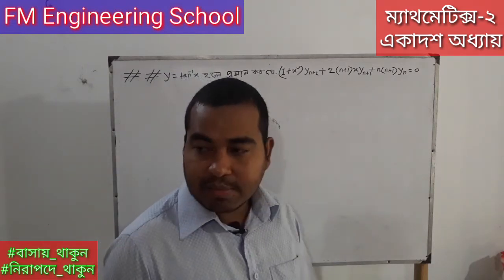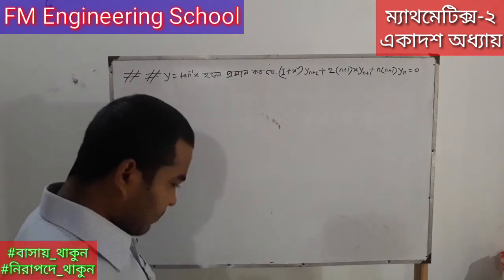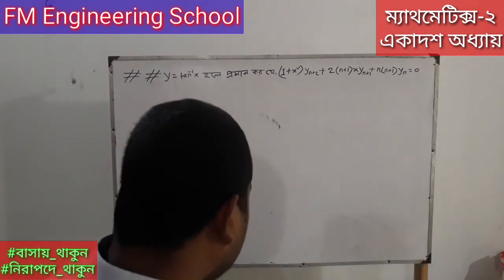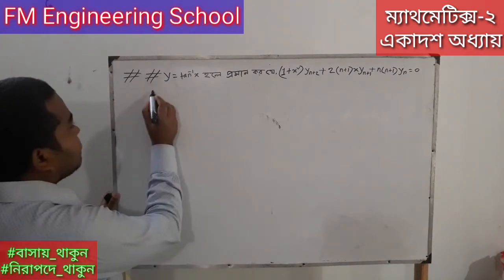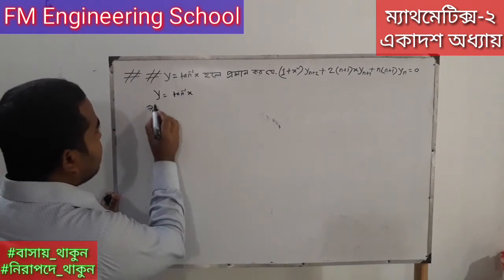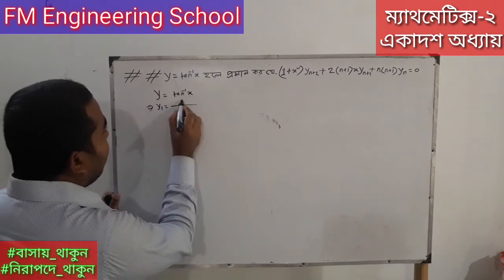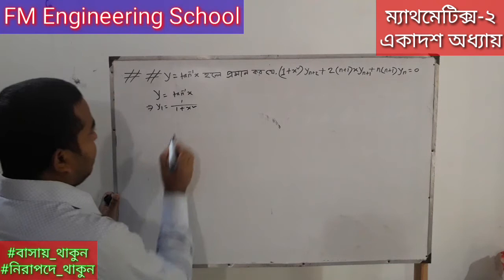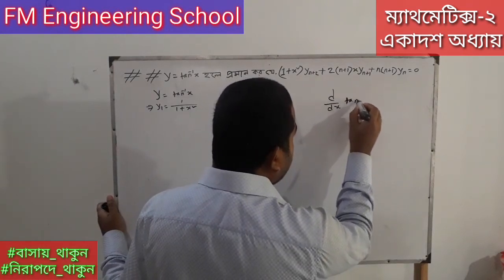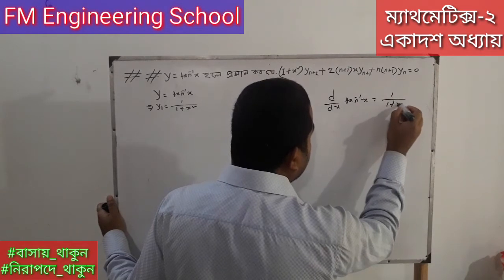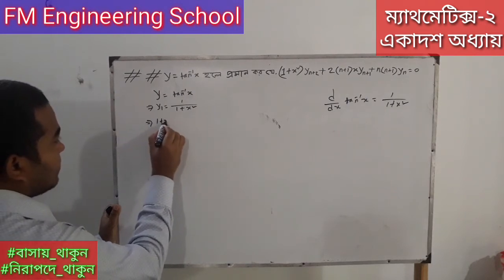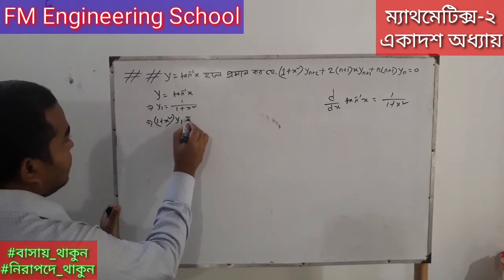The problem is: y is equal to tan inverse x. In this case, we will differentiate to get y₁ = 1/(1 + x²). This is because d/dx of tan inverse x is equal to 1/(1 + x²). So (1 + x²) y₁ = 1.